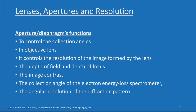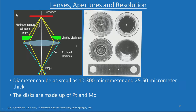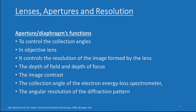What do apertures and diaphragms control? They control the collection angle beta. In objective lenses, they control the resolution of the image formed by the lens, the depth of field, and depth of focus. They also control image contrast, the collection angle of the electron energy loss spectrometer, and the angular resolution of the diffraction pattern. So apertures and diaphragms influence all these parameters.